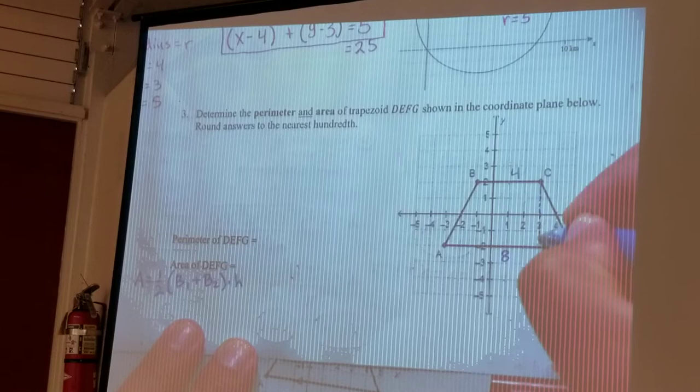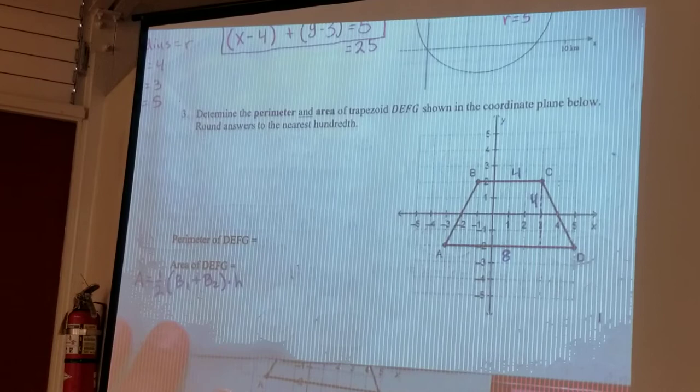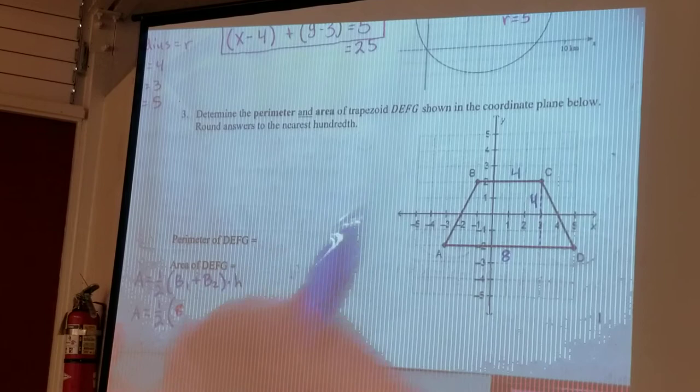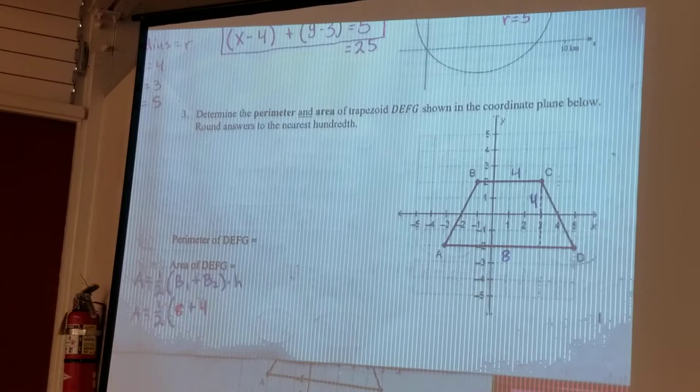All right, so the height here, which I'll put like a little dotted line, that's actually four units long. All right, so I can actually substitute all this into our area equation. This becomes area equals half times base one which is eight plus the base two which is four and then times the height which is also four.